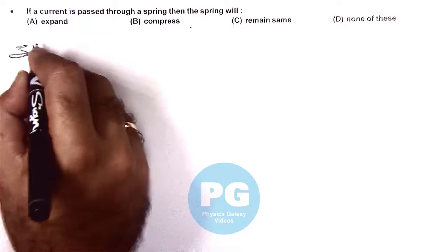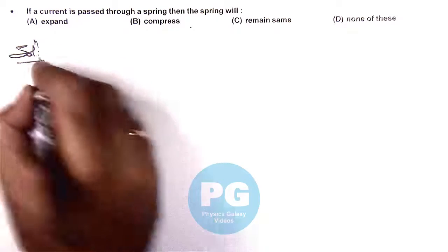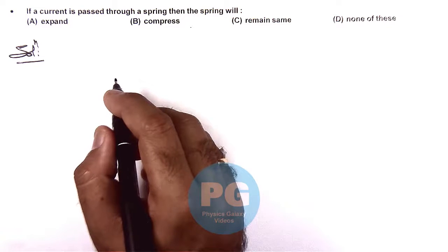We know well that two parallel current carrying wires attract each other, and two wires carrying current in opposite direction repel each other.